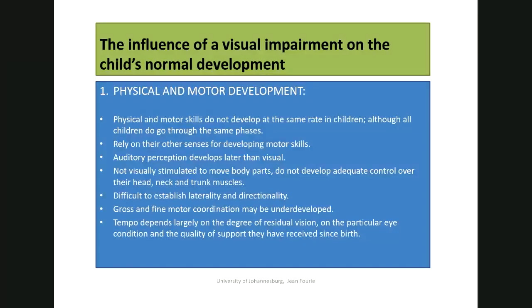Welcome back. We have been looking at visual impairments — the different kinds of difficulties children can have with their vision. We looked at a whole variety of things that can go wrong with the eyes and given you an indication of some of the things to look out for. I want to speak now about some of the influences that having a visual impairment has on a child's development.